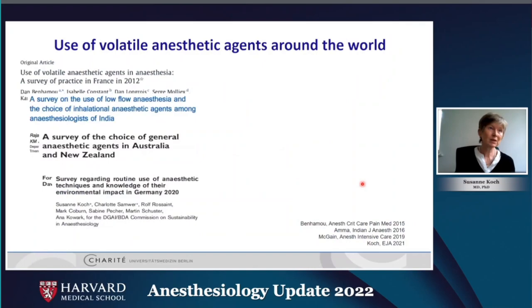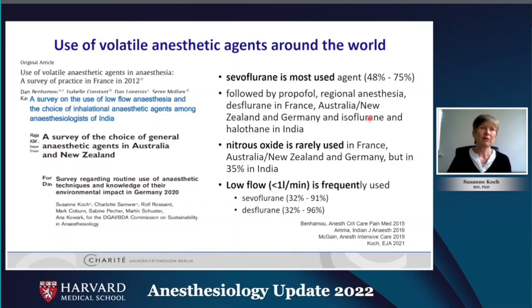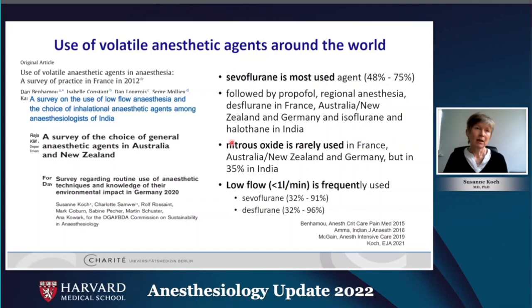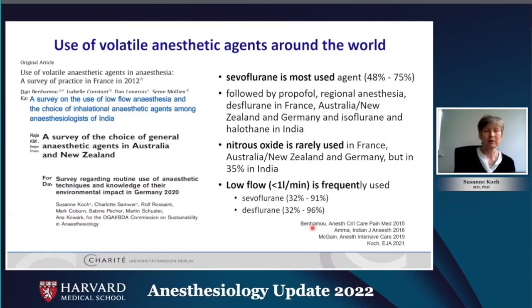Regarding the use of volatile anesthetic agents around the world, surveys from France, India, Australia and Germany found that sevoflurane is the most used agent worldwide, followed by propofol, regional anesthesia and desflurane in France, Australia and Germany. In India, they use more isoflurane and halothane. Nitrous oxide is only rarely used, except in India where it is still used in 35% of anesthesias. Most people around the world use low flow or minimal flow: 32% in India up to 90% in Germany, with France and Australia in between.